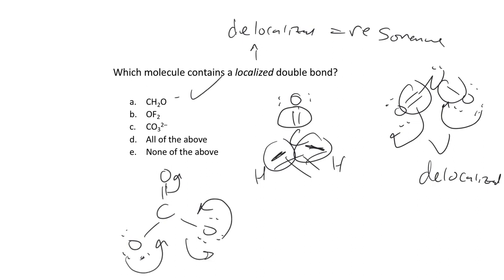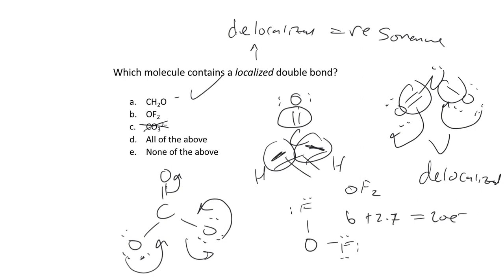For OF2: 6 plus 2 times 7 gives 20 electrons. Simply, oxygen is the central atom with fluorines single bonded; lone pairs on the fluorines accounts for 16 electrons, and the remaining 4 go on oxygen. That's neutral formal charge all the way around — just no double bonds at all in OF2. So the only molecule with a localized double bond would be formaldehyde, not OF2 or carbonate. The key difference between localized and delocalized in terms of nomenclature.